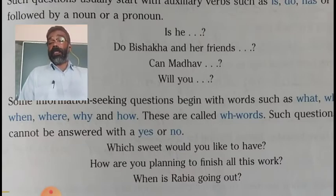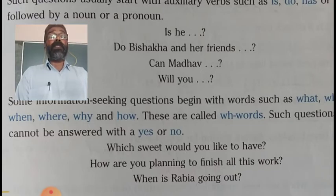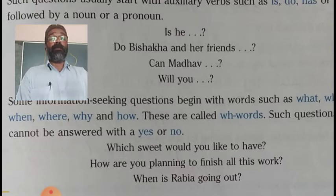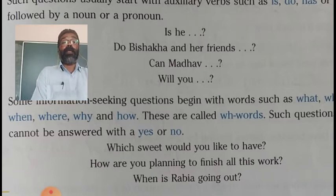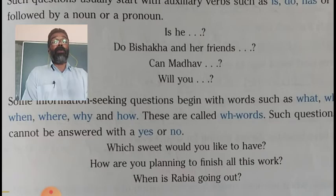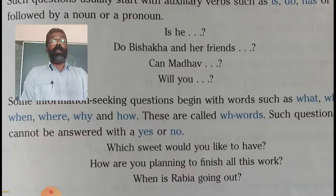Interrogative sentences are of two types: yes or no type questions, which begin with a helping verb, and WH questions, which begin with question words. Yes or no type questions can be answered in yes or no, whereas WH questions seek information and cannot be answered in just yes or no — we should provide information for these questions.